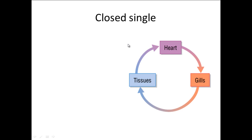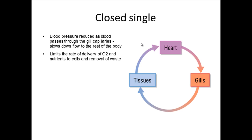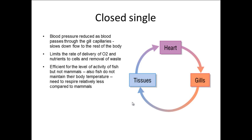Now because it's just a single transport system the blood pressure actually decreases as the blood passes through the gill capillaries, which then slows down the flow of blood to the rest of the body. Because the blood is slowing down, that limits the rate of O2 and nutrient delivery to cells and also limits the removal of waste. However this is okay for fish because they don't need to maintain their body temperature, therefore they don't need to respire as much as mammals.